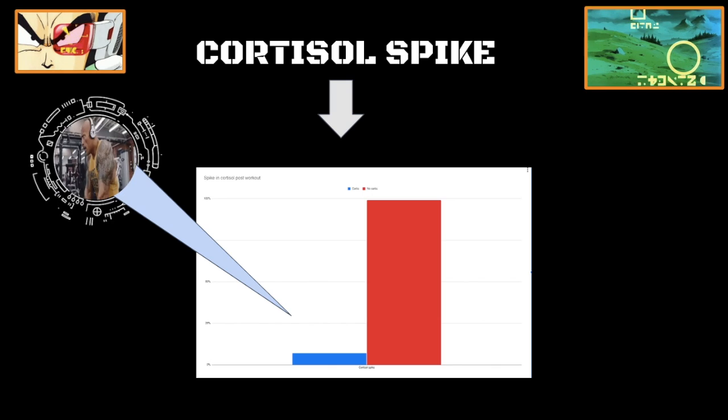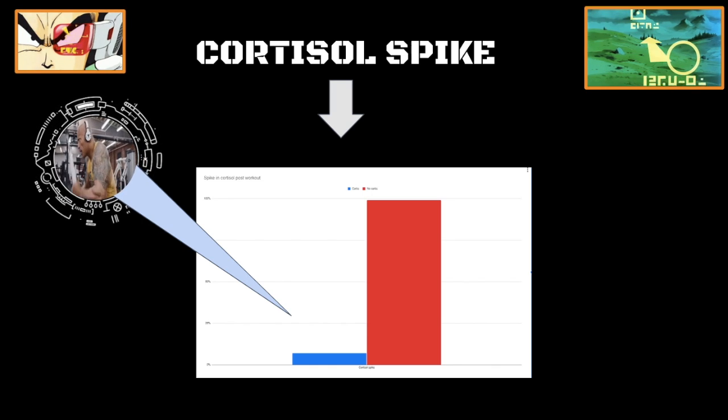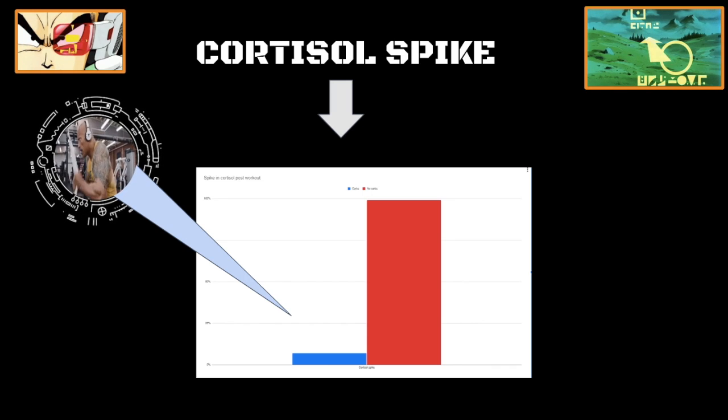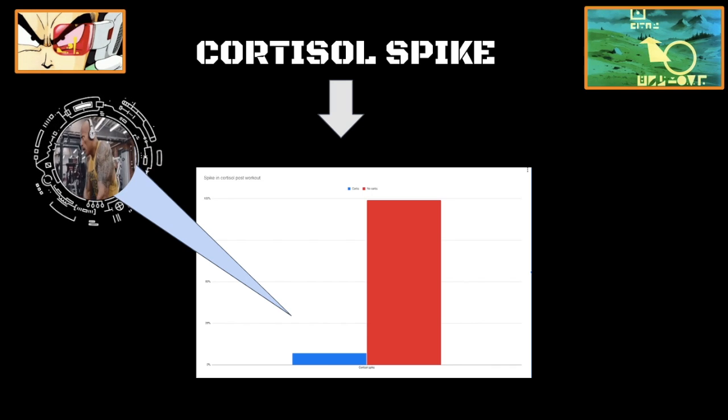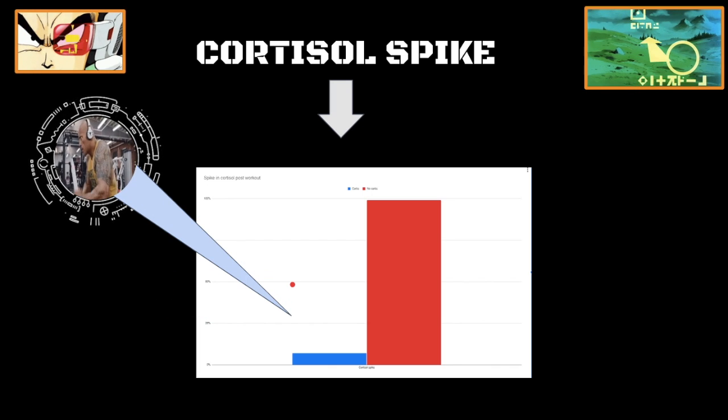Remember, you do not want cortisol to be too elevated during training, else that's gonna interfere with testosterone, interfere with free testosterone, and it's gonna make it very hard for you to maximize the results from that workout. Obviously you're still gonna make gains, but you're gonna see soon it's gonna be at a very, very slow pace.